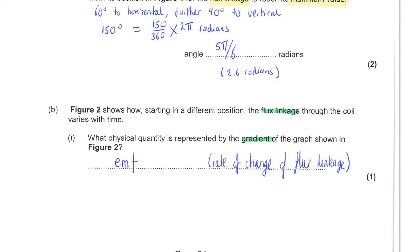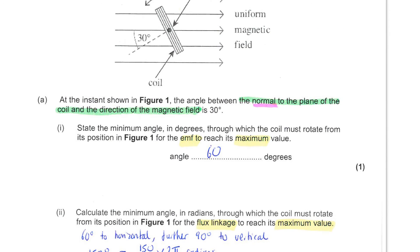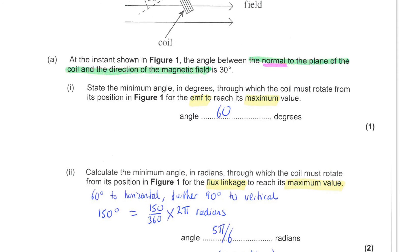Next you are asked to calculate the minimum angle in radians through which the coil must rotate from its current position in order for the flux linkage to reach its maximum value. This does not coincide with the previous situation. Maximum flux linkage will occur when this coil is sitting vertically. When the coil is vertical, the entire cross-sectional area of the coil is facing the field lines, giving maximum flux linkage. The coil must first rotate until it is horizontal and then carry on rotating through a further 90 degrees until it is vertical.